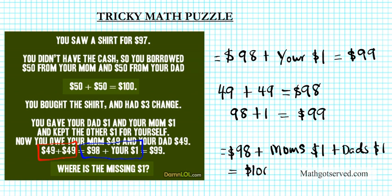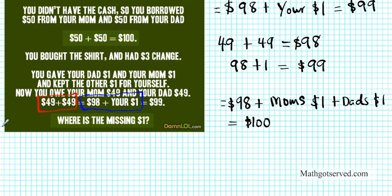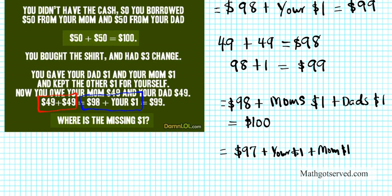If you wanted to write an expression using your $1 as a component, you must extract it from the $98, because when you give your mom and dad a dollar, you still have a dollar with you along with the cost of the $97 shirt. So you'd have $97 for the shirt, plus your $1, plus mom's $1, plus dad's $1. This is a more accurate rendition of this remark — and this step to this step is a false equation. That's why you're missing a dollar.